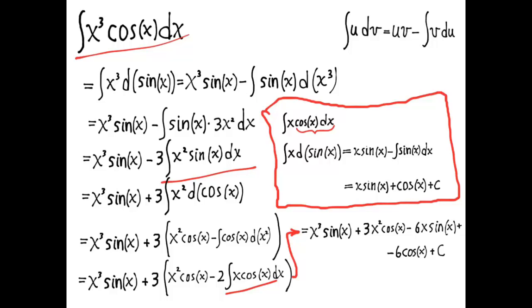If that seems like a lot of work, don't worry — all we're doing is taking successive derivatives of x³ and successive antiderivatives of cos x. Instead of all this writing, we can work it out as a little table. I'll show you at the end of this video how to do that.